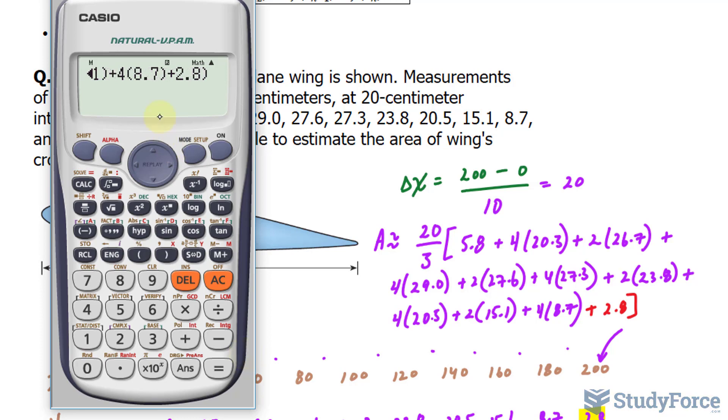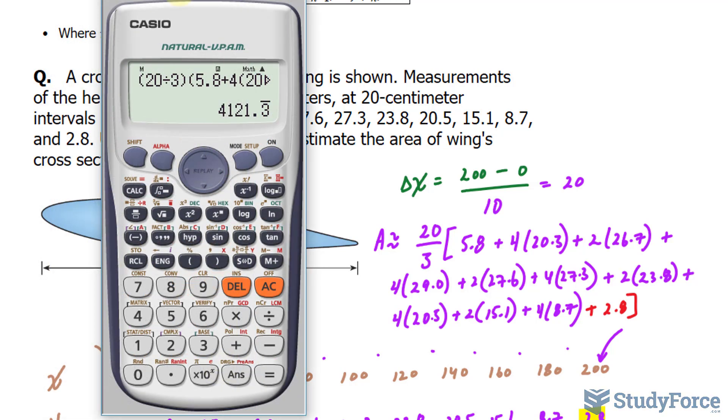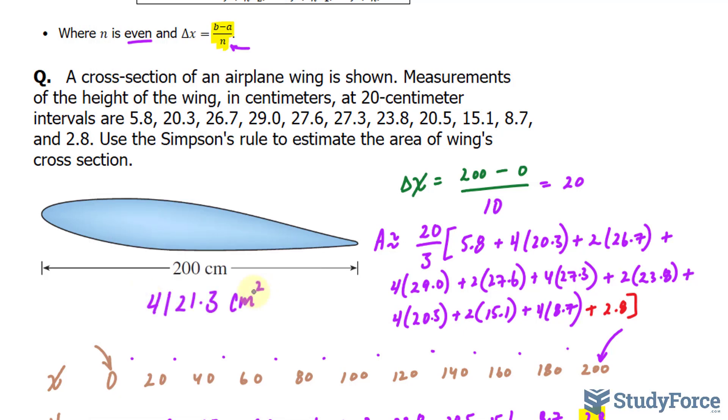Okay, so I'm ready to click equals. This gives us an area of 4,121.3 repeating centimeters squared. Let's write that down. Now you should be asking yourself, is this reasonable?